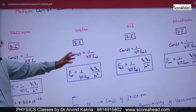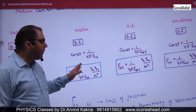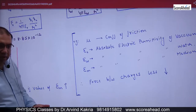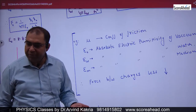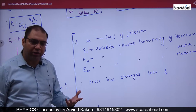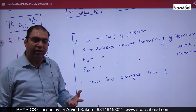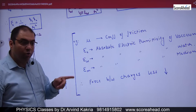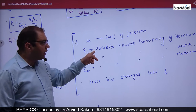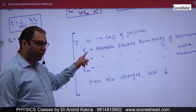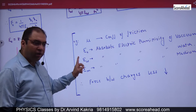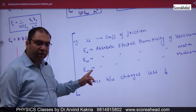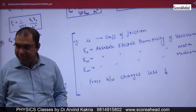For water, oil, or any other medium, we need ε_M (epsilon M). The symbol ε (epsilon) represents permittivity. ε₀ is the absolute electrical permittivity of vacuum, ε_W is the absolute electrical permittivity of water, and ε_M is the absolute electrical permittivity of any medium.